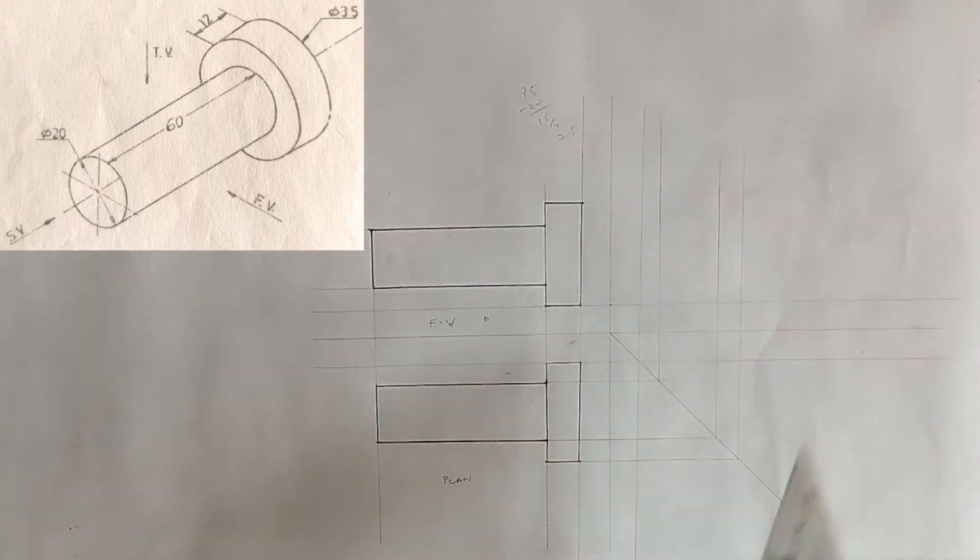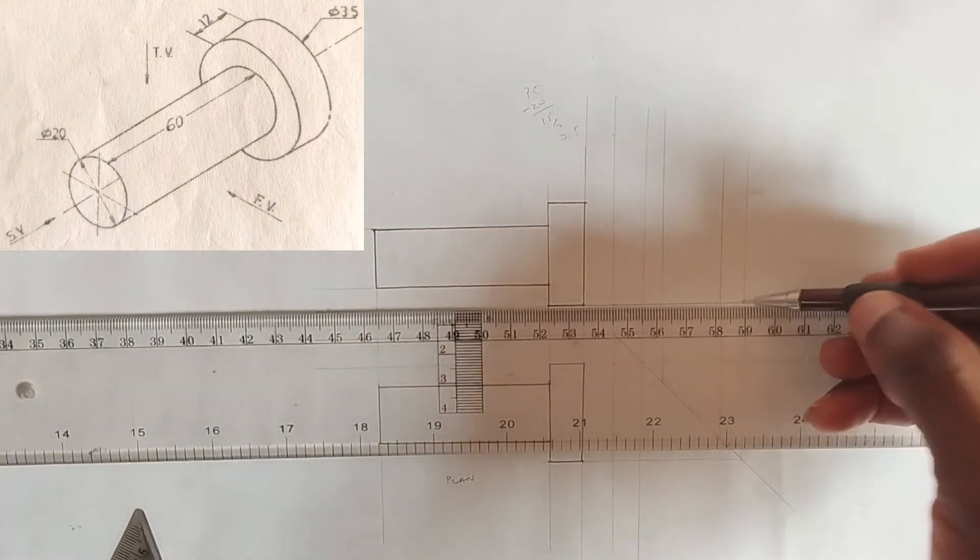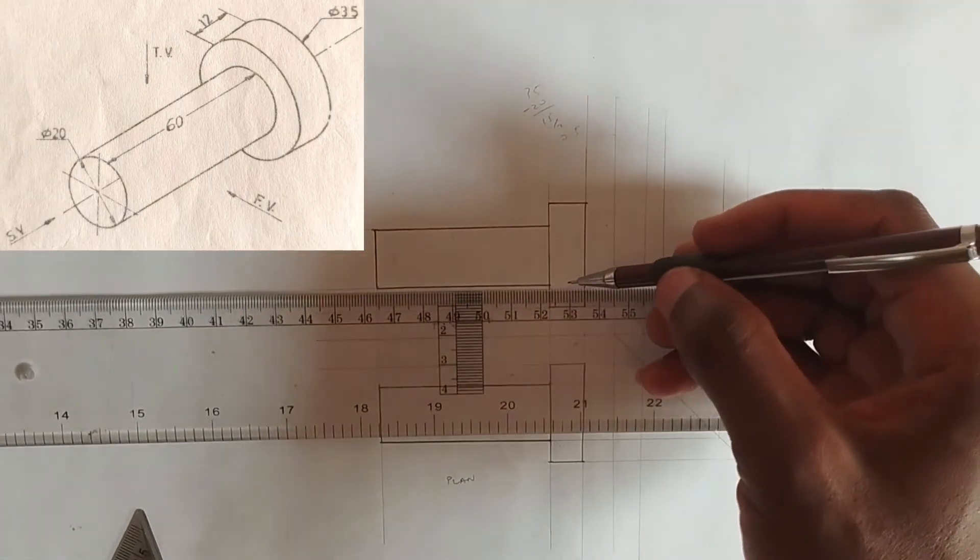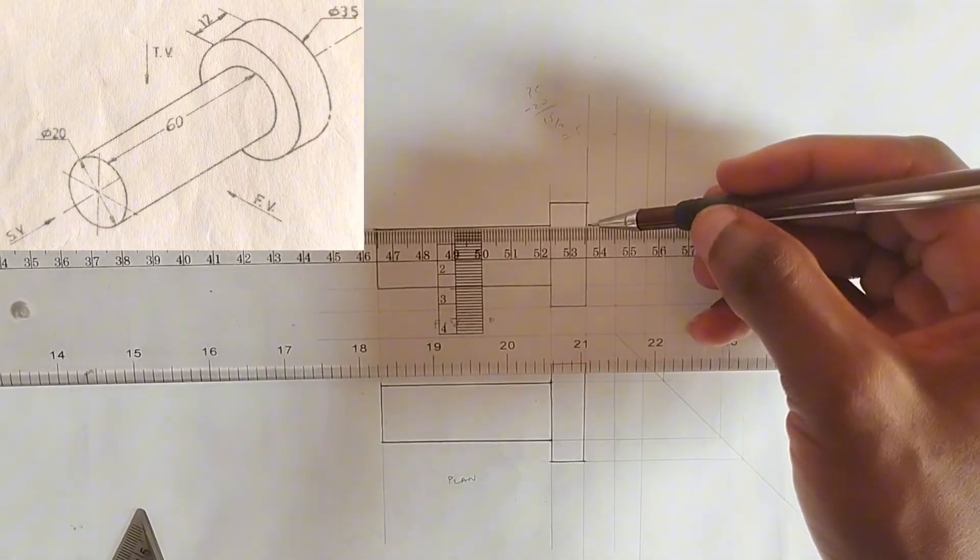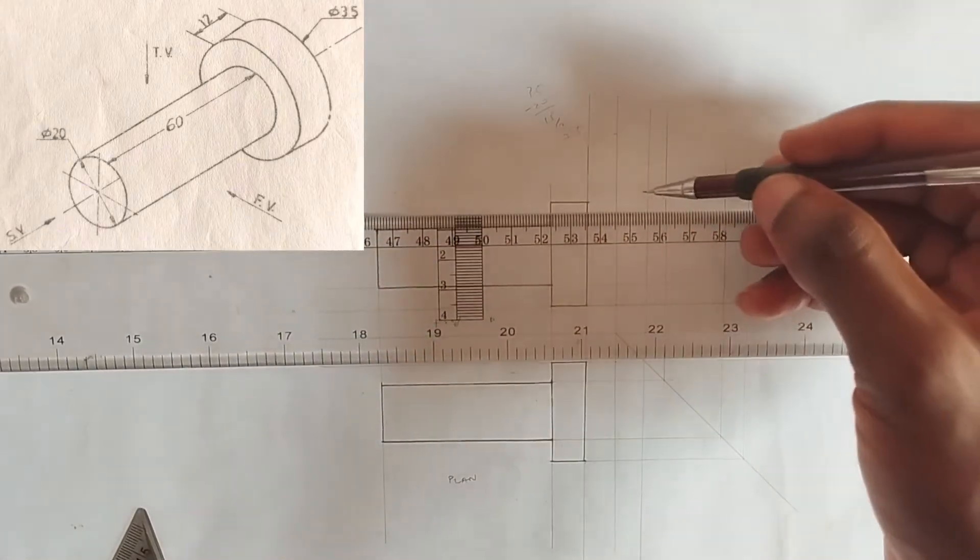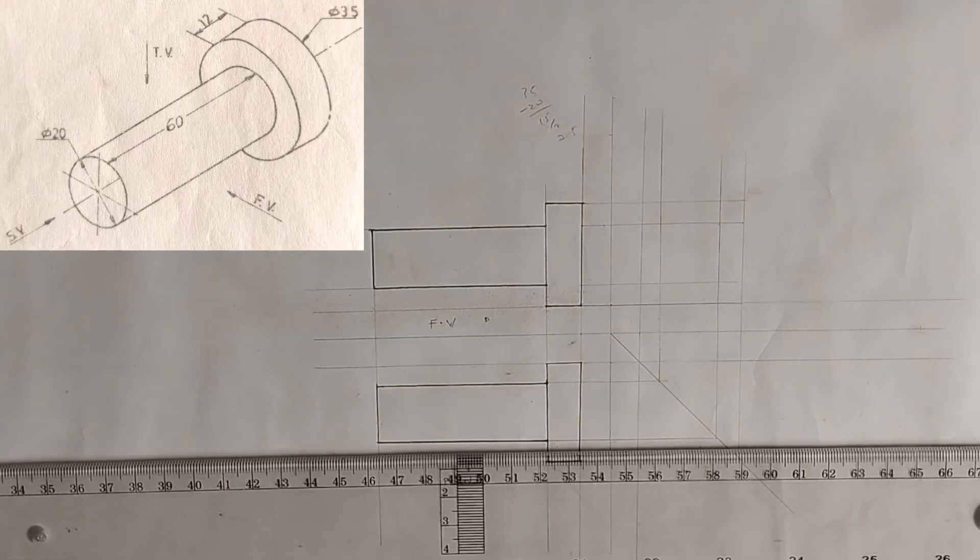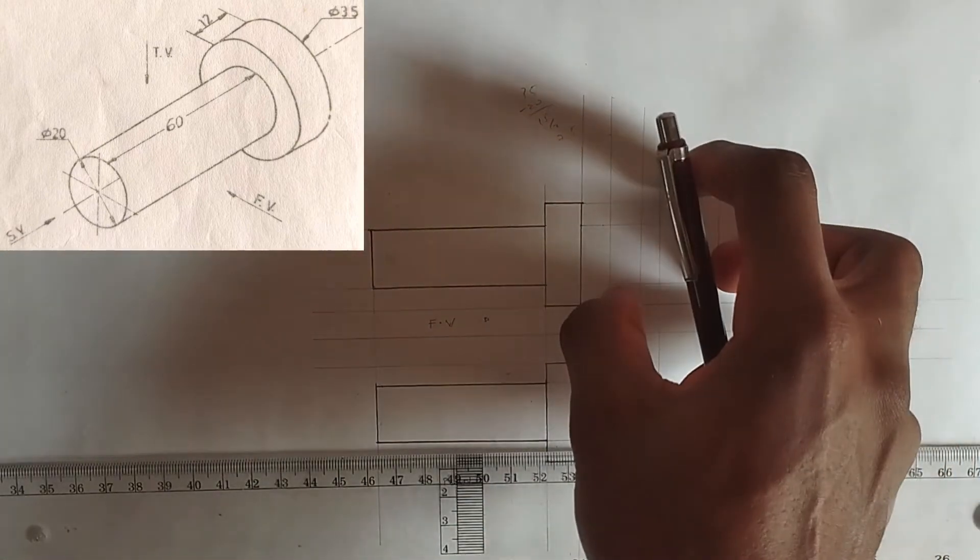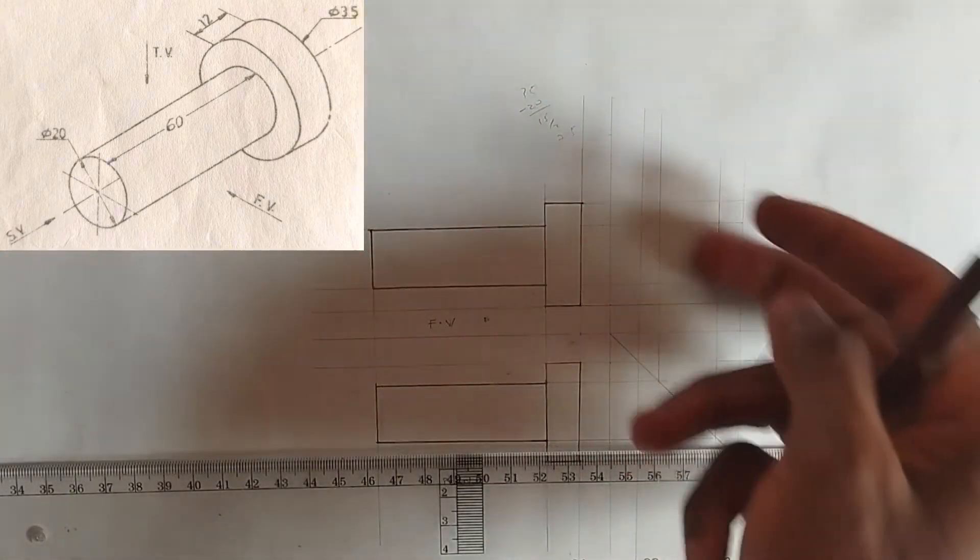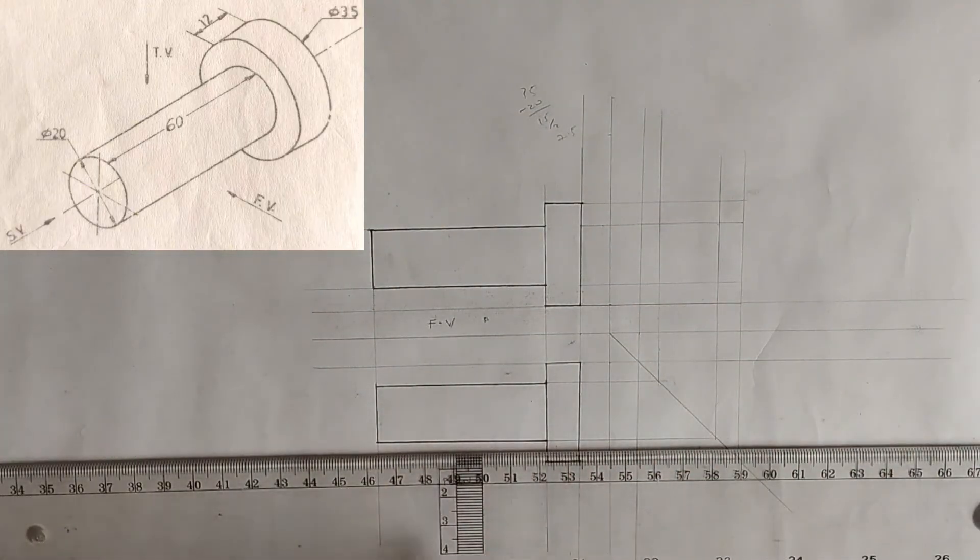Now we are going to be projecting line from the front view towards our right-hand side like this. Make sure there are tinting lines, please. Make sure there are tinting lines. Now, from the diagram we have seen, we have seen that our side view is actually going to be a circle because we can actually see circles in this drawing.